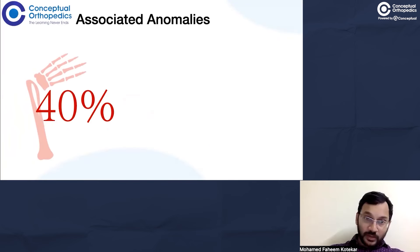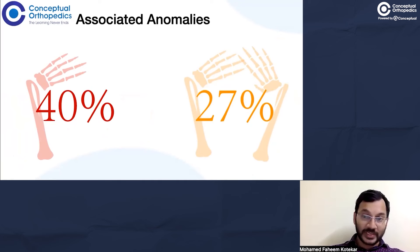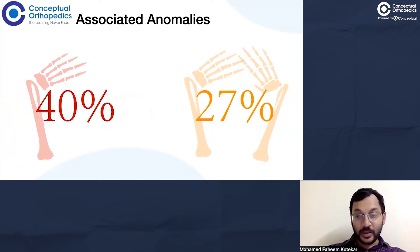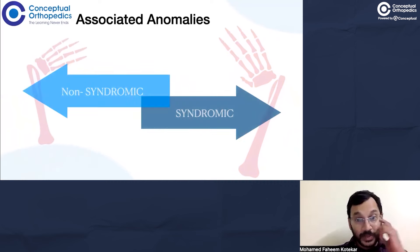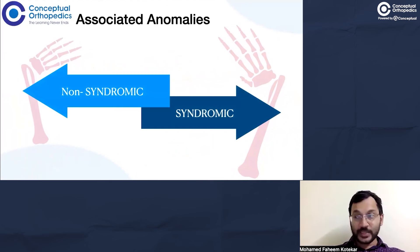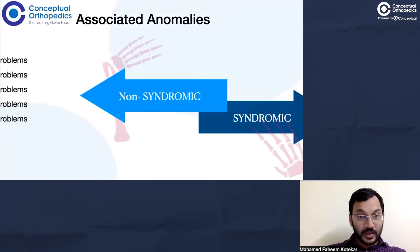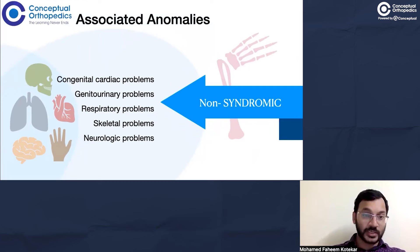About 40 percent of unilateral radial club hand cases have associated anomalies, and about 27 percent of children with bilateral radial club hand have associated anomalies — meaning about one in two or one in four children we see with radial club hand will have an associated anomaly. These associated anomalies can be either syndromic or non-syndromic. Among non-syndromic presentations there can be congenital cardiac problems, genitourinary problems, respiratory issues, skeletal problems, and neurological problems occurring in isolation with radial club hand.